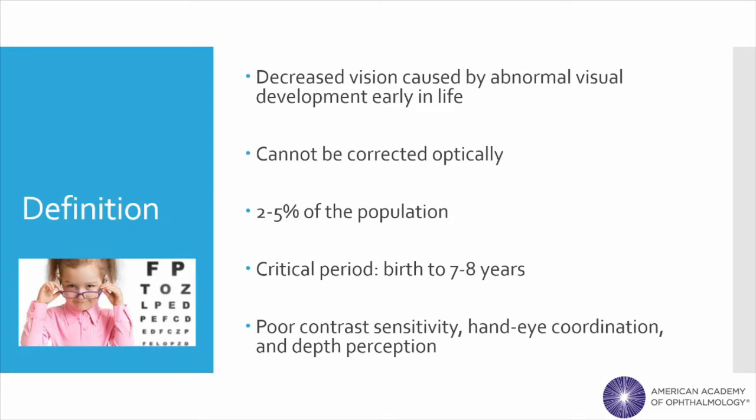Children with amblyopia can have decreased visual acuity, poor contrast sensitivity, hand-eye coordination, and spatial localization. We'll talk about how this happens in the next slide.